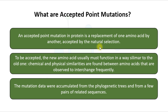What are Accepted Point Mutations? An accepted point mutation in a protein is a replacement of one amino acid by another that is accepted by natural selection. The new amino acid usually must function in a similar way to the old one. Chemical and physical similarities are found between amino acids that are observed to interchange frequently. This likelihood should depend on the product of frequencies of occurrence of two amino acids and on their chemical and physical similarities.